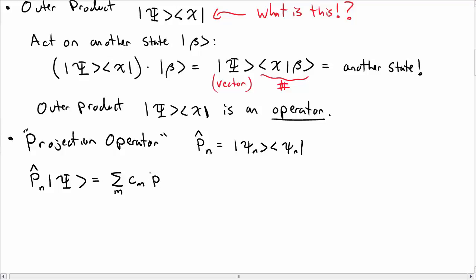And so if I write psi as the sum over m, c sub m, psi sub m, and so then my projection operator, I write out my projection operator, and that should be a psi m. So then this inner product here gives me a delta mn, so I have a sum over m. And so then I do my sum, my sum picks out one term, which is the cn term psi n.